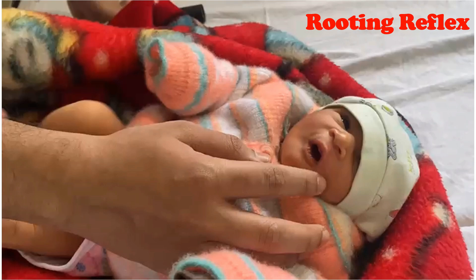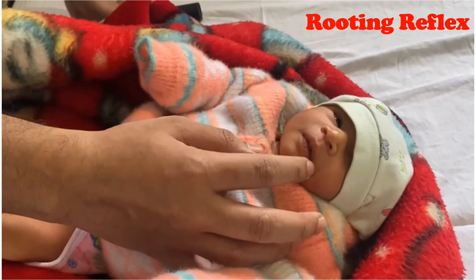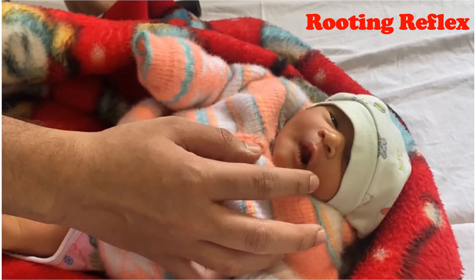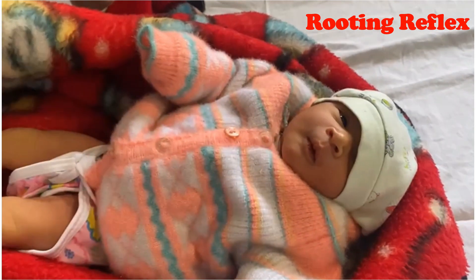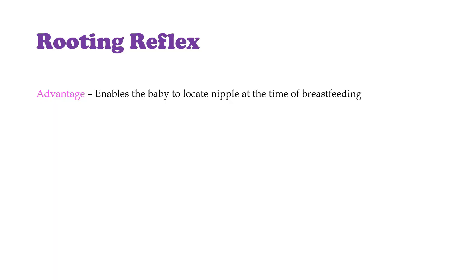Starting with the practical demonstration — in the rooting reflex, when the corner of the mouth of a baby is stroked, the baby reflexly turns his head towards the stimulus and opens his mouth like this. The advantage is that this enables the baby to locate the nipple at the time of breastfeeding.